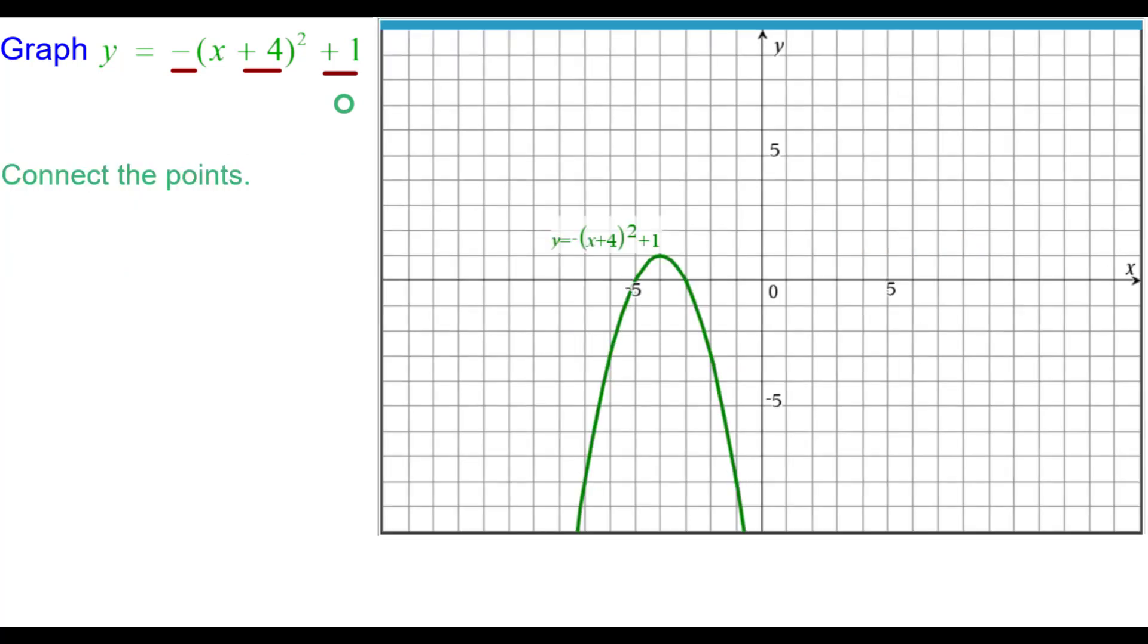Connect the points into a parabola looking shape. You can see it is opening downwards. The vertex is at negative 4 comma 1. And the axis of symmetry is the line x equals negative 4. The curve is symmetric about that.